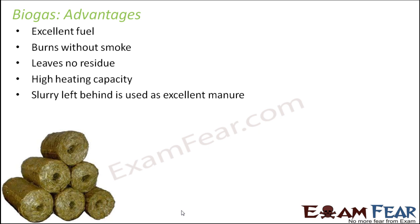The slurry left behind after biogas production is used as an excellent manure. That residue which remains is the slurry, but it is not a waste — it can be used as manure. Manure, when added to the soil, increases its fertility. So whatever is left behind in a biogas plant is also advantageous to us in another way.